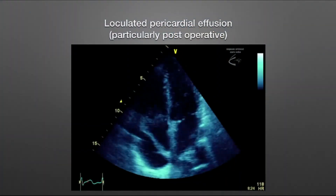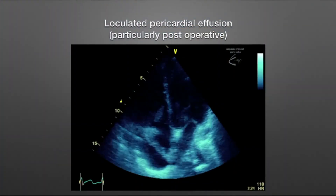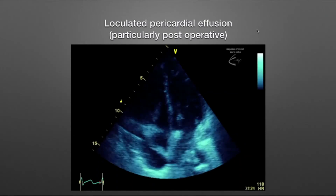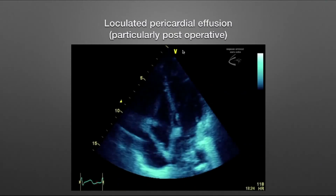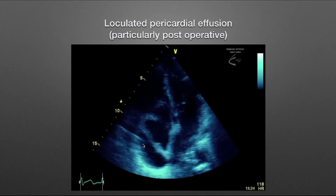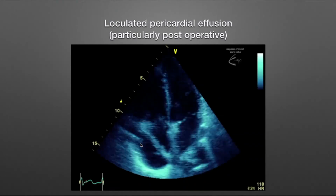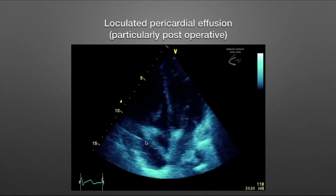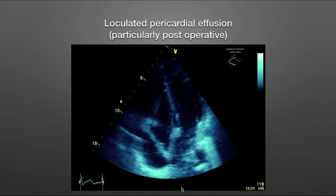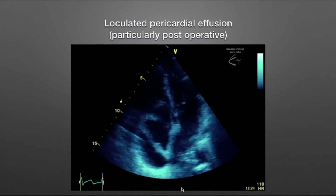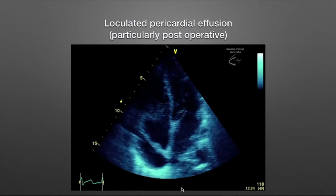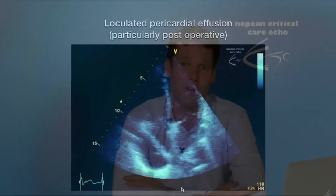In terms of loculated pericardial effusions, these can particularly occur postoperatively. In this example, there is no circumferential fluid — just a loculated effusion sitting behind the right atrial wall, causing significant impairment to that right atrial free wall function. This in itself can cause tamponade physiology by preventing adequate inflow into the right ventricle.